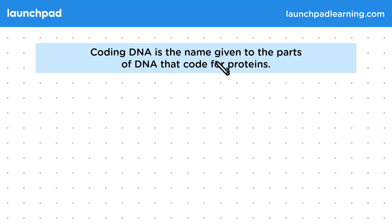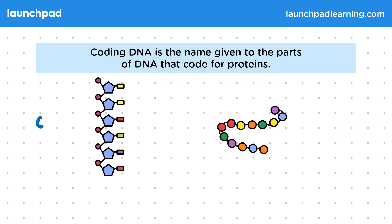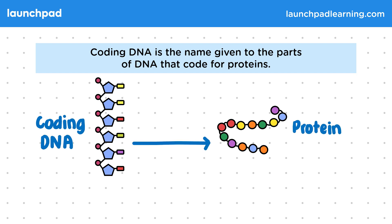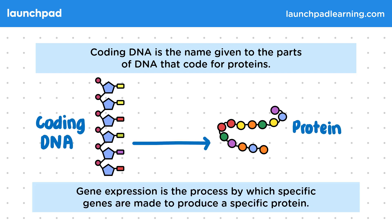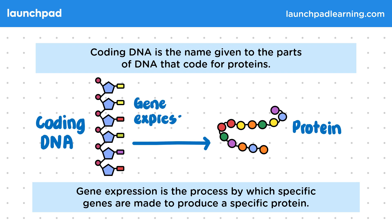Coding DNA is the name given to the parts of DNA that code for proteins. Ribosomes make proteins using the information from coding DNA. Gene expression is the process by which specific genes are made to produce a specific protein. So how is gene expression controlled by the cell?